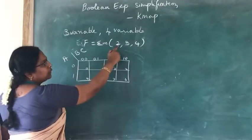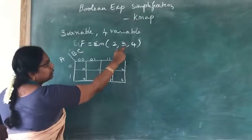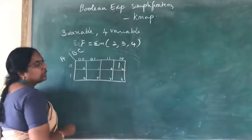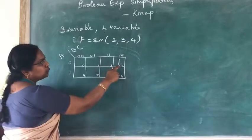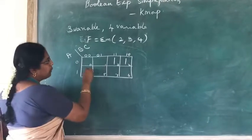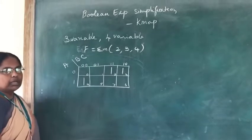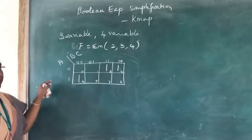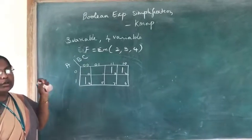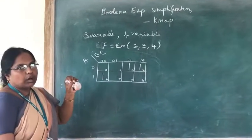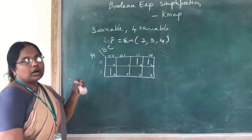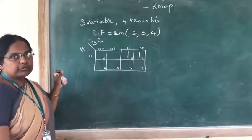For this problem, the min terms are 2, 3, and 4. So we will plot 1 in min term cell 2, then plot 1 in cell 3, and plot 1 in cell 4. Now we need to do grouping. When forming groups, we must form groups of 1, 2, 4, 8, or 16 cells — that is, in powers of 2.